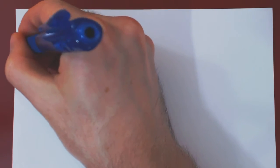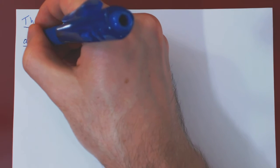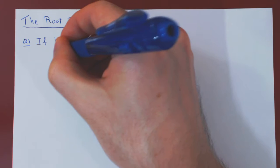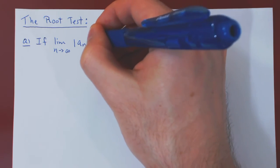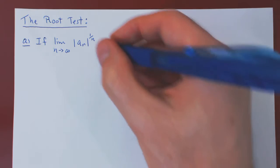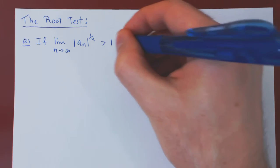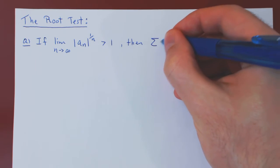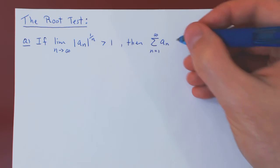Just as the ratio test, the root test has three parts, so here's the first part. If the limit as n tends to infinity of the nth root of |an| is strictly bigger than 1, then the series of an, n going from 1 to infinity, diverges.